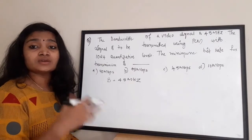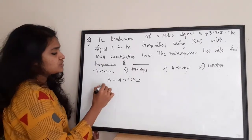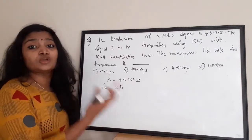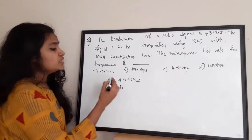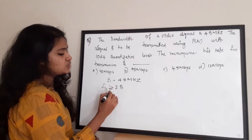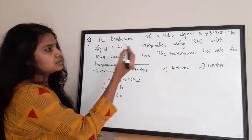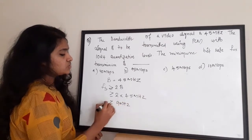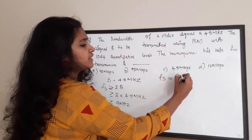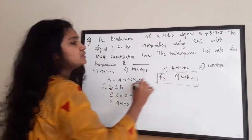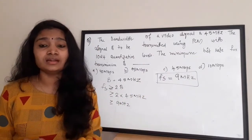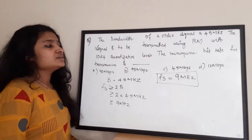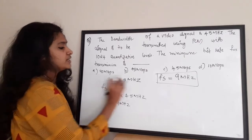The bandwidth B is given as 4.5 megahertz. According to the Nyquist criteria, the sampling rate Fs must be greater than or equal to 2 × B. So Fs ≥ 2 × 4.5 megahertz, which gives Fs ≥ 9 megahertz. For PCM transmission, we take Fs = 9 megahertz. We then need to sample the signal, then quantize the signal.